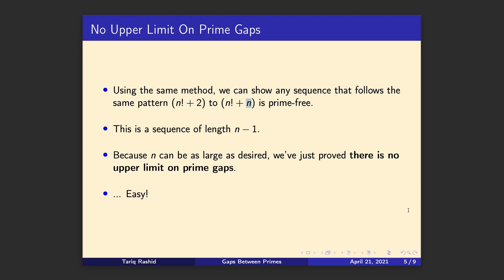So the interesting thing there is that sequence from n factorial plus 2 up to n factorial plus n, that's a sequence of length n minus 1. And remember, n could be anything now. It could be 10, could be 100, could be a million, could be a trillion, could be anything. And therefore, this prime-free sequence can be as large as we like. If n is 100, that sequence has a length of 99. If n is a million, then it's a million minus 1.